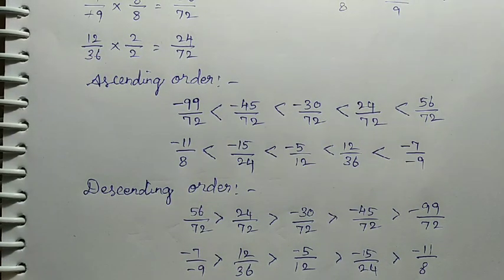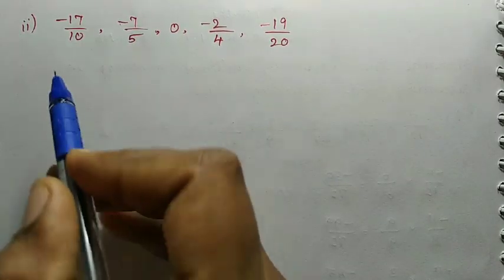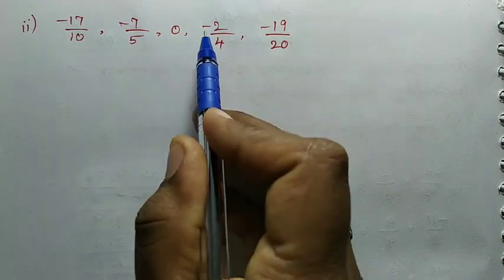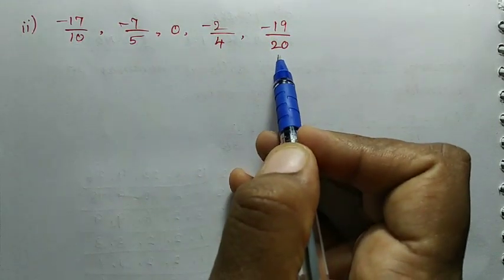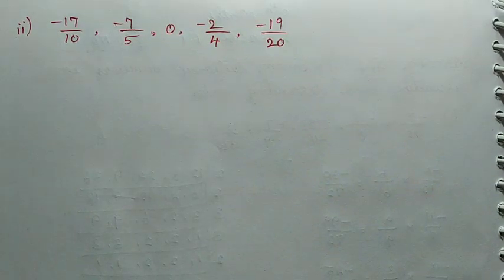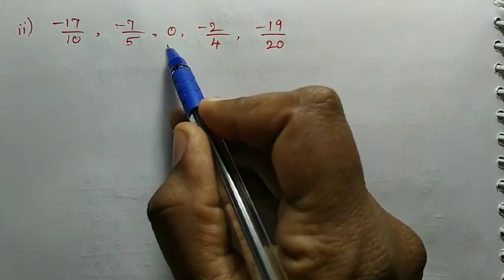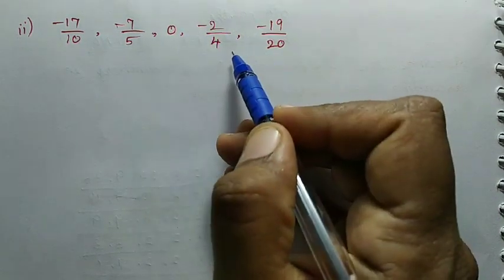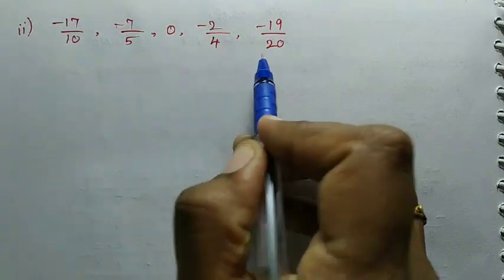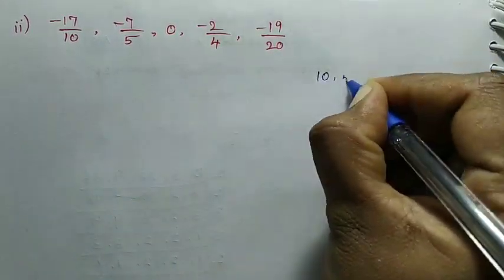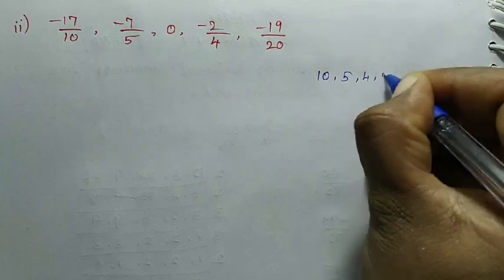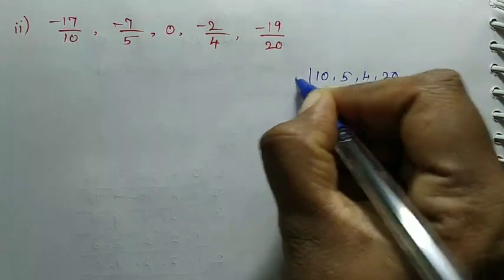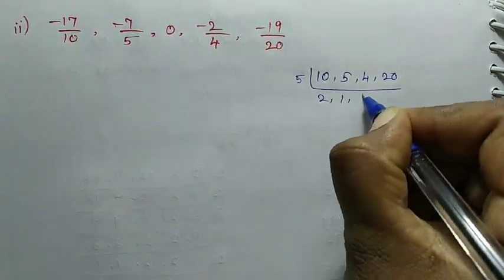This is the second division. The second division is: minus 17 by 10, minus 7 by 5, 0, minus 2 by 4, minus 19 by 20. So here are 5 rational numbers including 0 divided by 1. To compare, we find the LCM of the denominators: 10, 5, 4, 20. Dividing by 5: 2, 1, 4, 4.